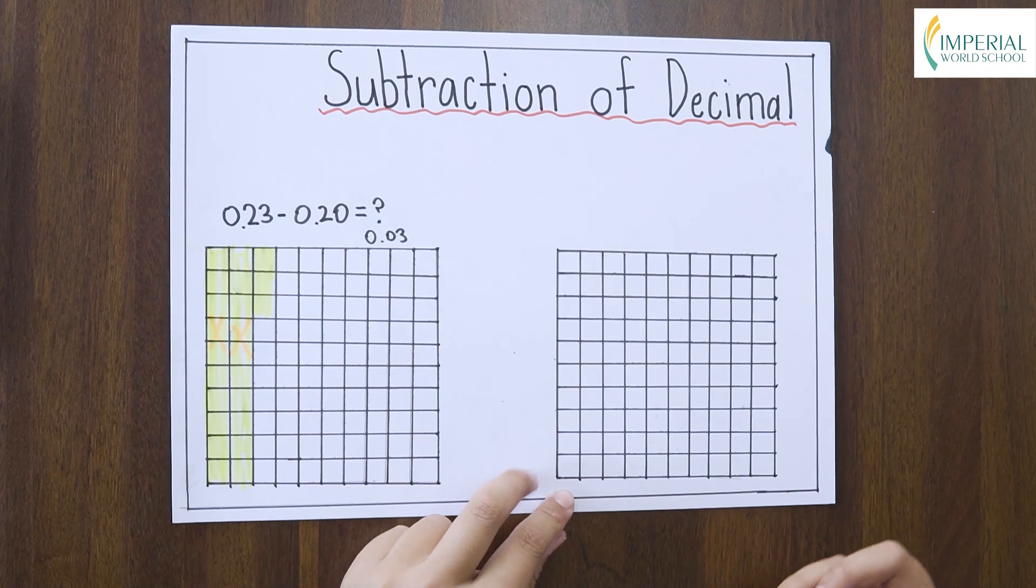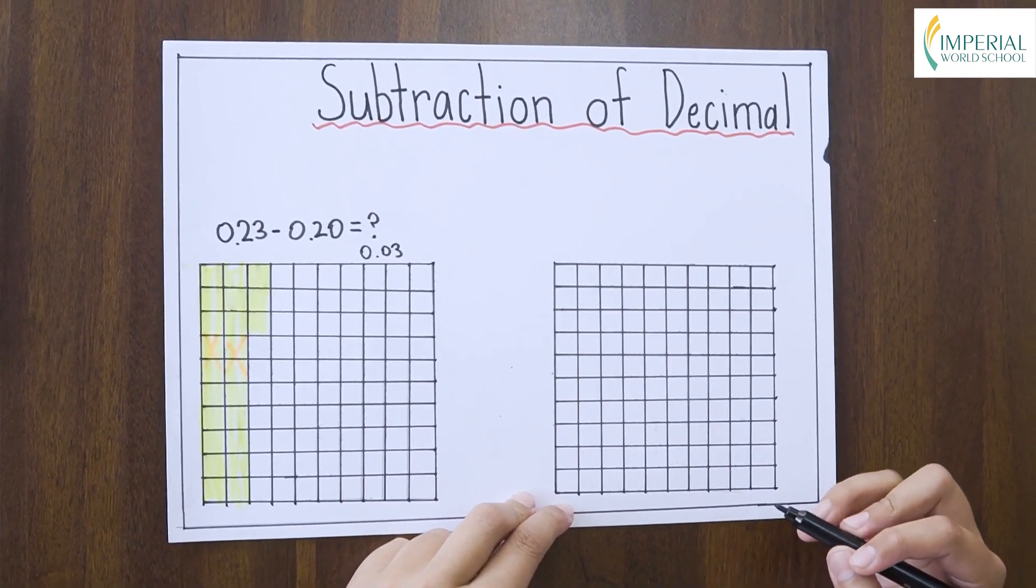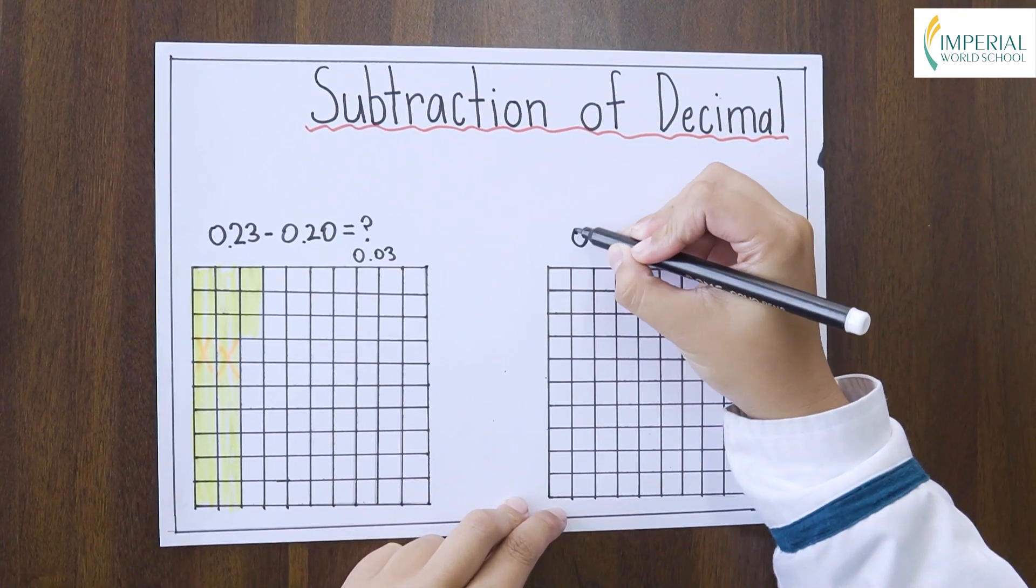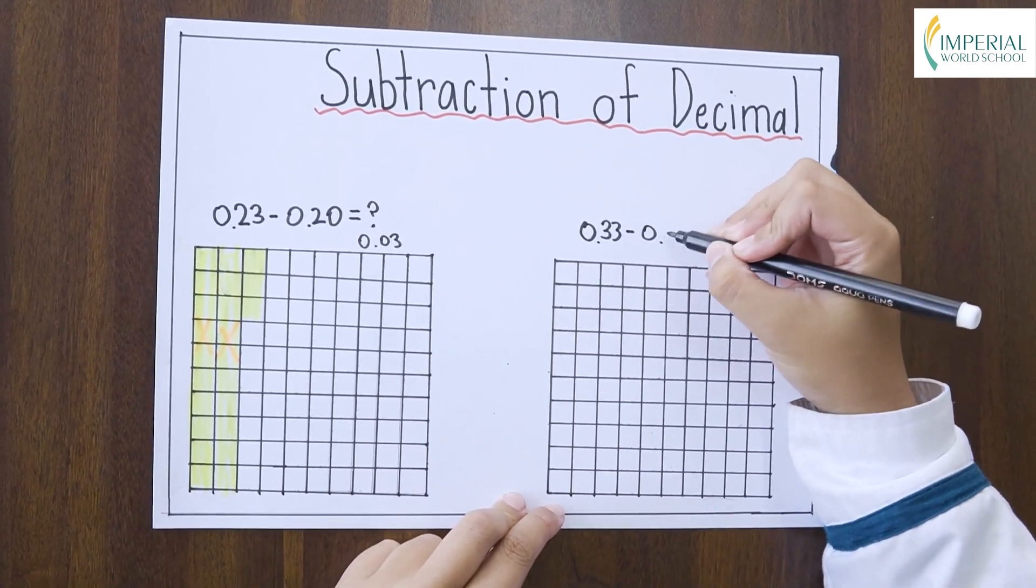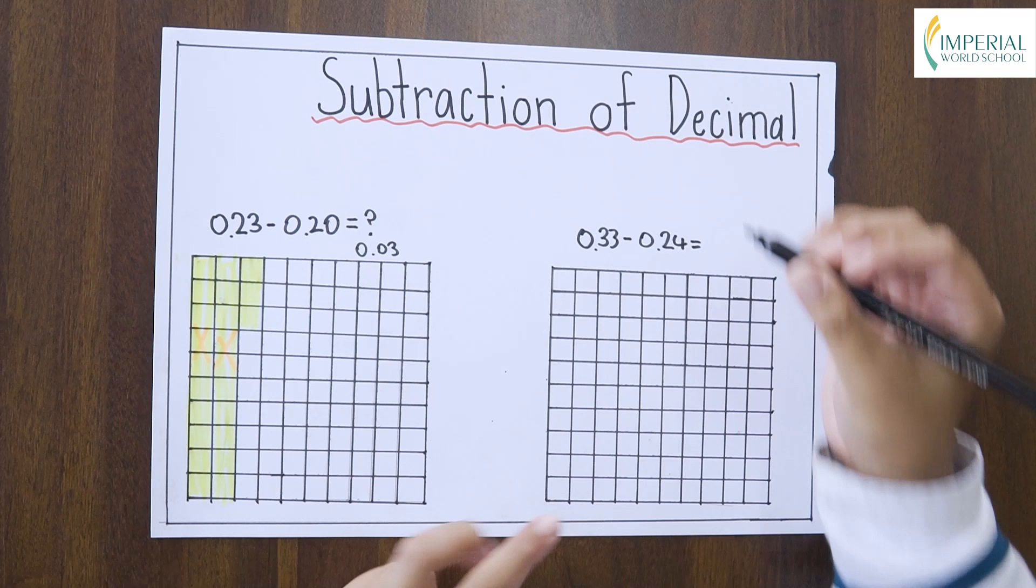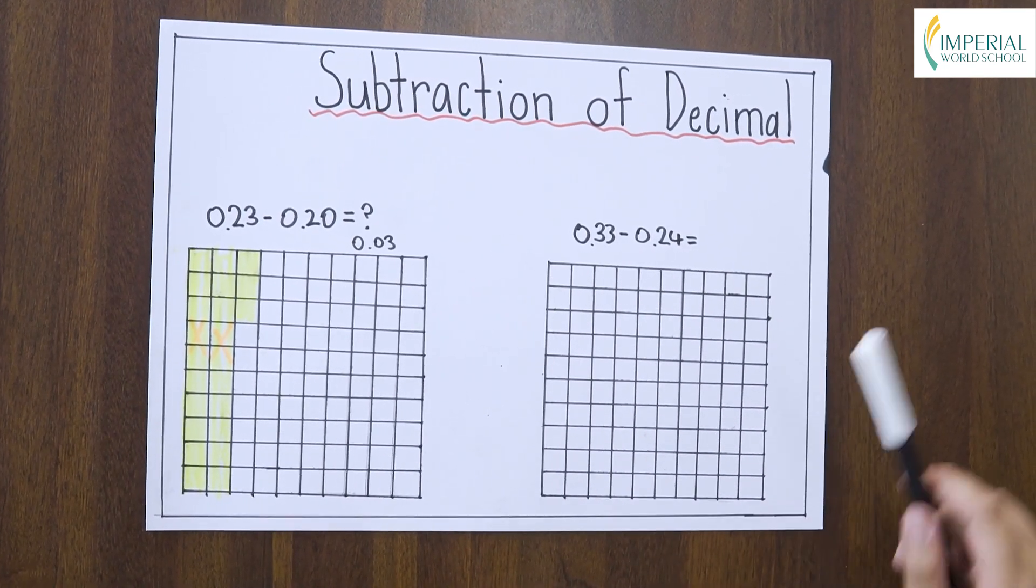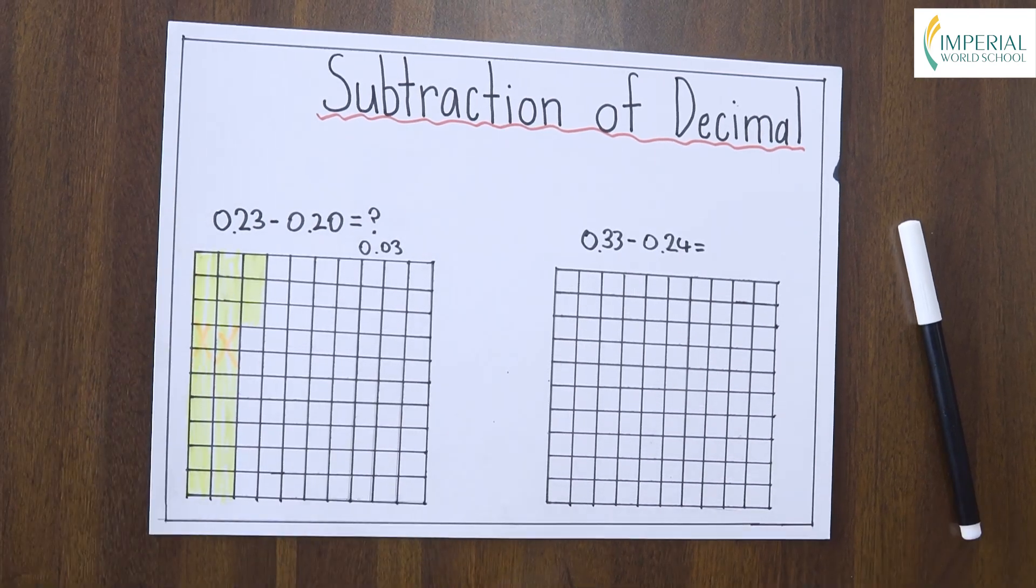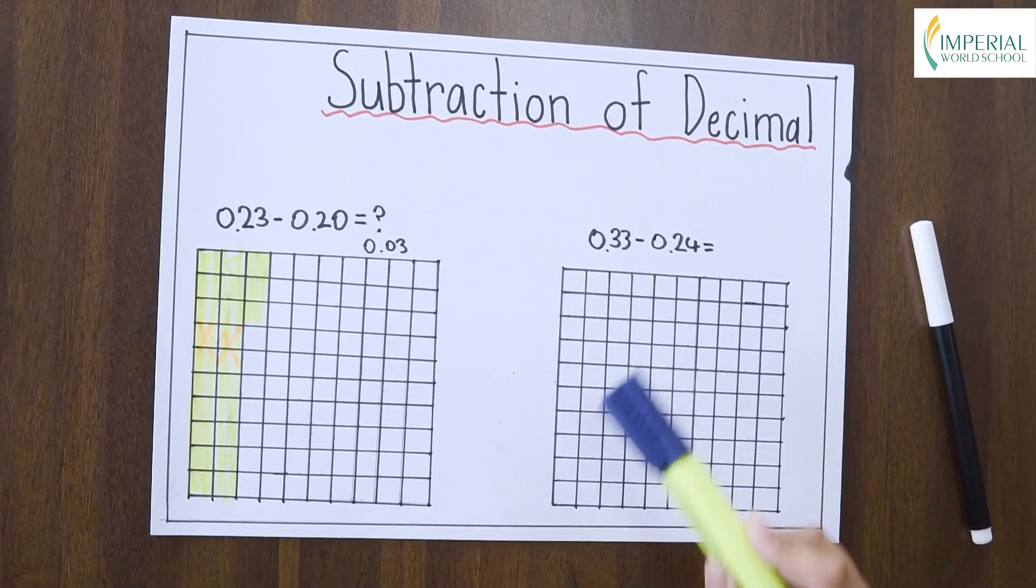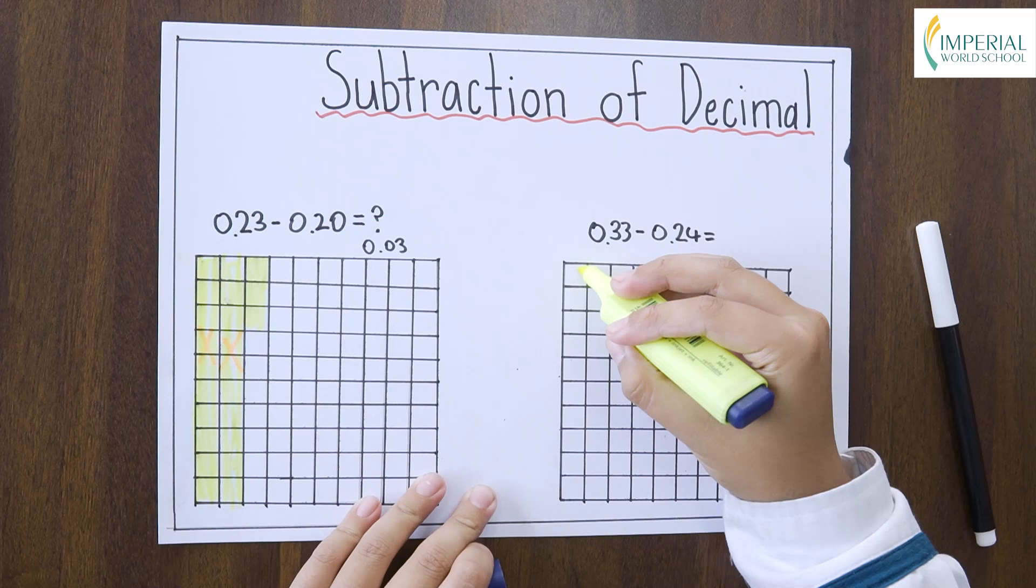Let's take another example. Another example of decimal number is 0.33 and 0.24. Now we will be doing the same process to find the difference. So since there is three tenths, we will shade three tenths.